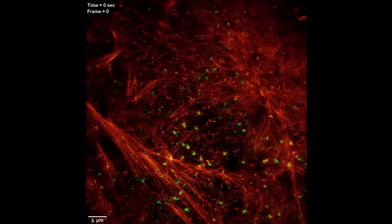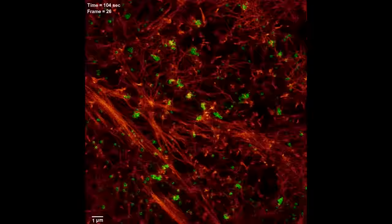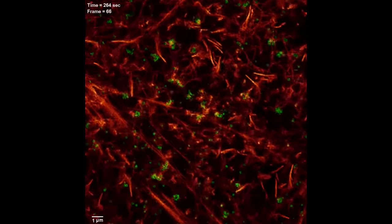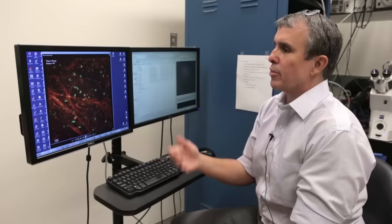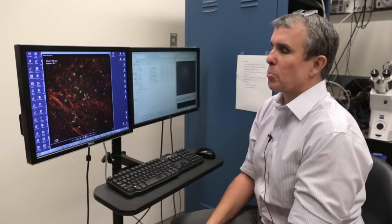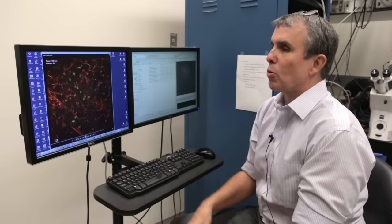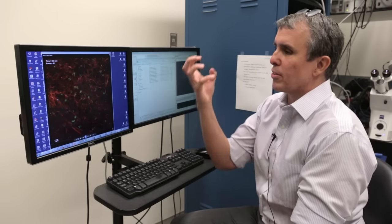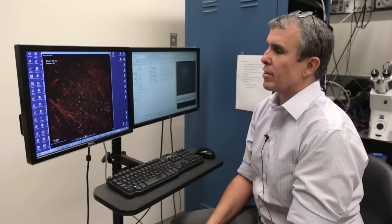And those rings are actually little baskets called clathrin-coated pits, which are used to take cargos, molecular cargos, inside of the cell past its plasma membrane. And there's a lot of debate in the community about the role of actin in clathrin-mediated endocytosis, about how those baskets are pulled in and then internalized inside of the cell.